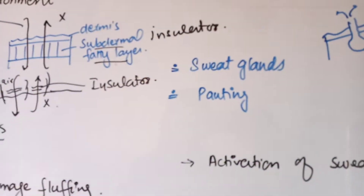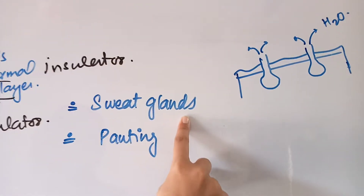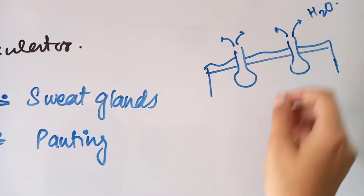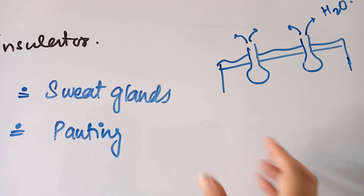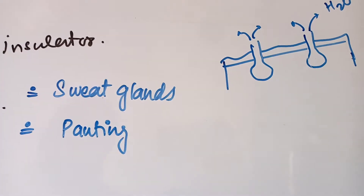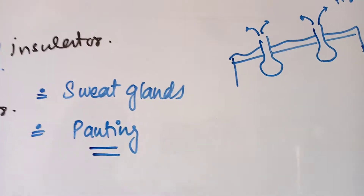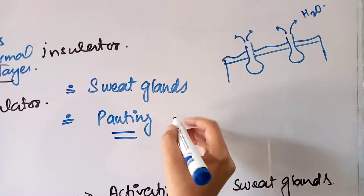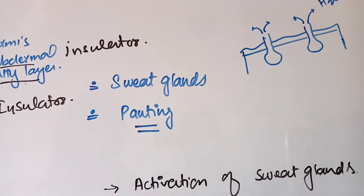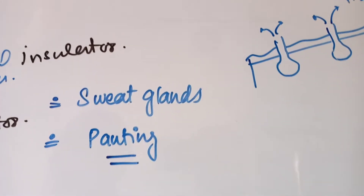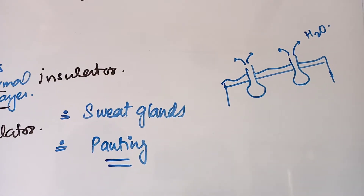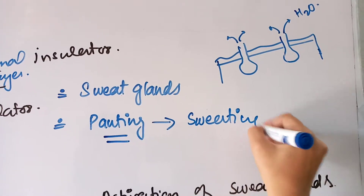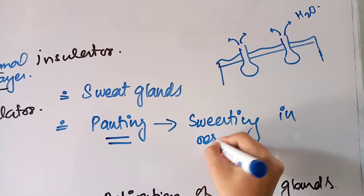Next, if we talk about other structural parts, there are sweat glands in the skin. Sweat glands release water due to the temperature of the body. Now, for those animals whose bodies are covered in fur, sweat glands are not available, but they have panting — a specific respiratory tract mechanism where they sweat through the respiratory tract to remove body heat.